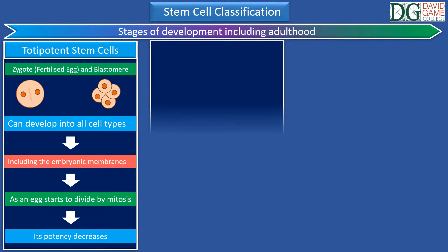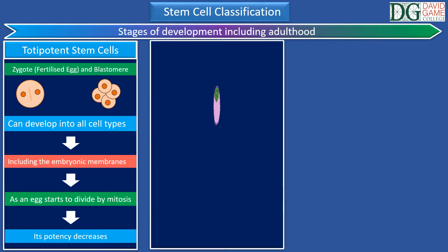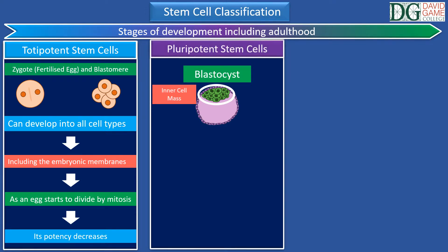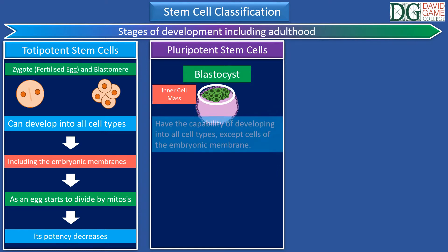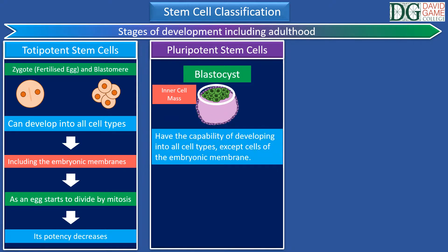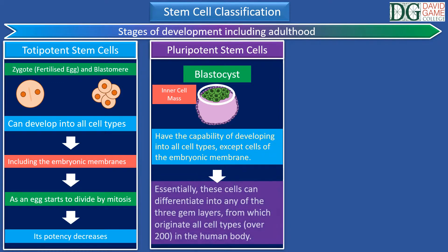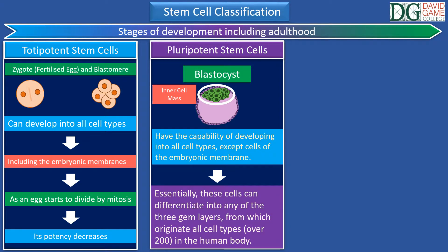Soon after the zygote starts to develop into a morula, it reaches the stage of blastocyst. The inner cell mass of the blastocyst, also called embryonic stem cells, consist of pluripotent stem cells, and have the capability of developing into all cell types except cells of the embryonic membrane. Essentially, these cells can differentiate into any of the three germ layers, from which originate all cell types in the human body.